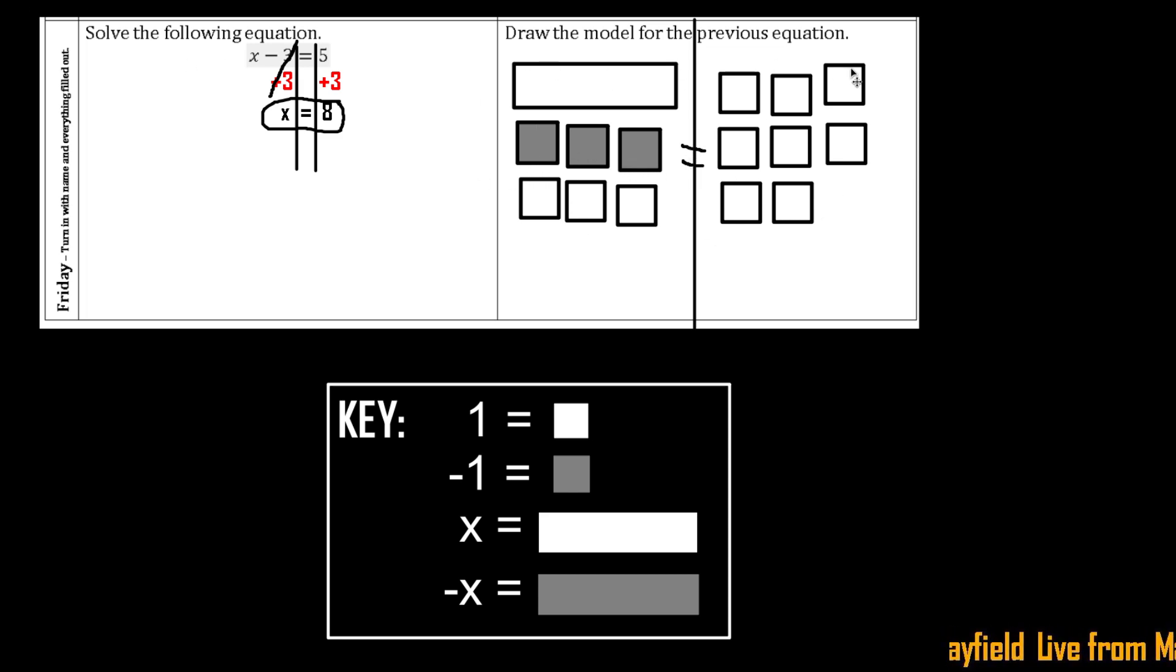You have to make sure that you combine like terms. So there's no other x's to combine with, so the x stays the same. And then we notice, hey, we can make some zero pairs with these, right?